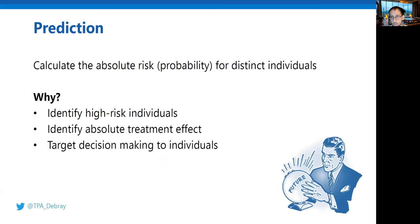We want to identify high-risk individuals. For instance, with coronavirus, we might want to predict who is at high risk of being infected, because then we could prioritize decisions or policies — such as vaccination — to those individuals. We could also predict who has the highest chance of dying from coronavirus and prioritize our policies accordingly.